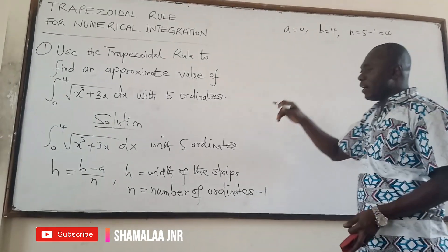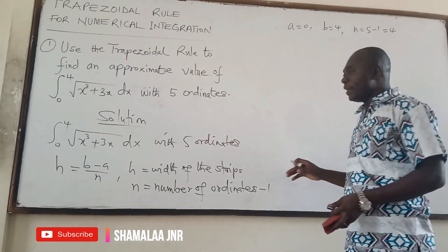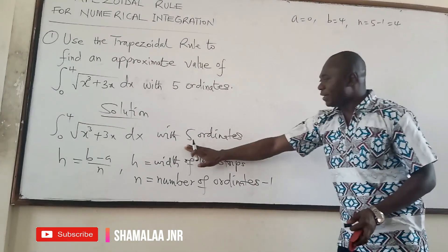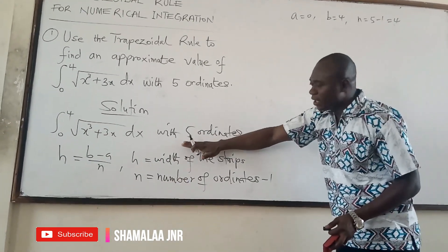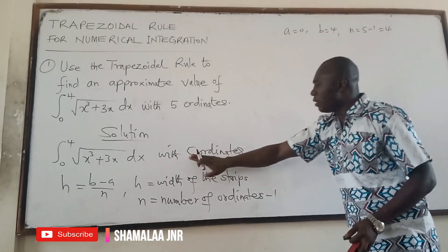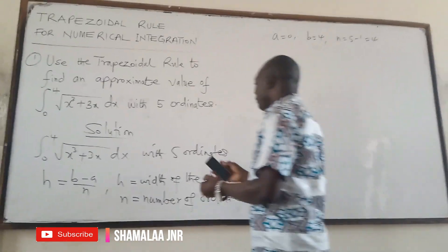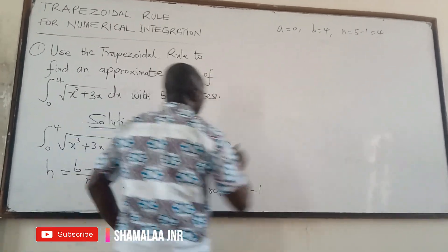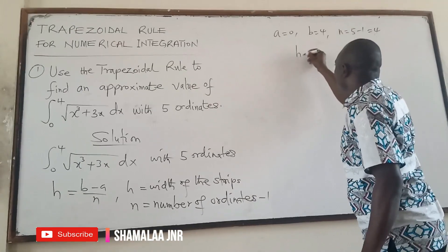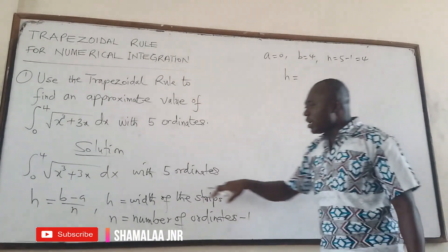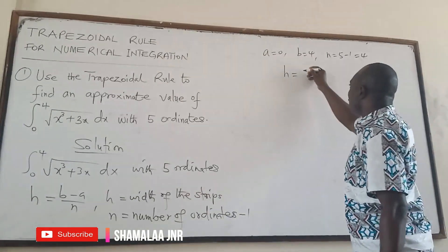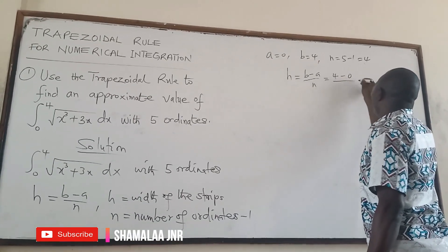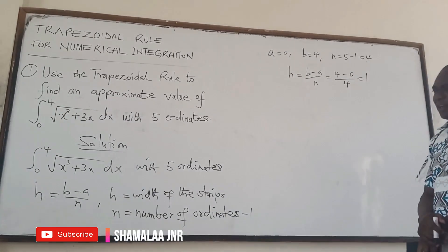The number of intervals plus one gives you the number of ordinates; on the other hand, the number of ordinates minus one gives you the number of intervals. If intervals are given directly, n is whatever number of intervals you have. If ordinates are given, subtract one to get n. Then calculate h, which is b minus a over n, equal to four minus zero over four, which is one.